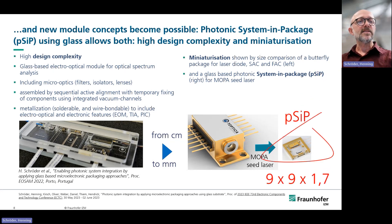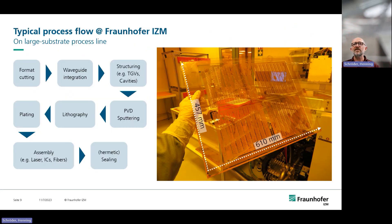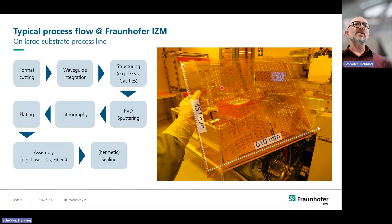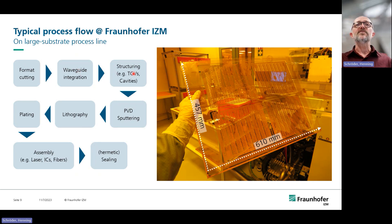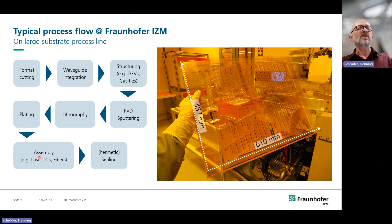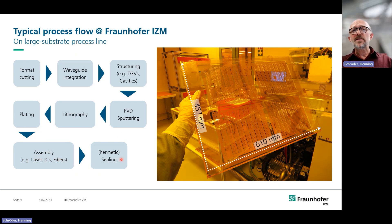On the right-hand side you can see a glass panel, and the processes we use to structure it are as follows: cutting, waveguide integration, structuring for through-glass vias, for cavities, and for component placement. We have physical vapor deposition by sputtering, lithography, plating, then assembly of several components — laser diodes, photodiodes, ICs, fibers — and hermetic sealing. I will explain these processes in more detail in the next slides.